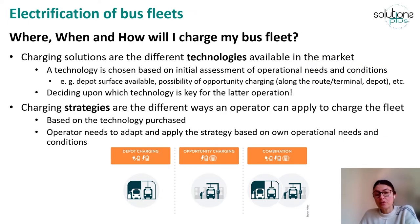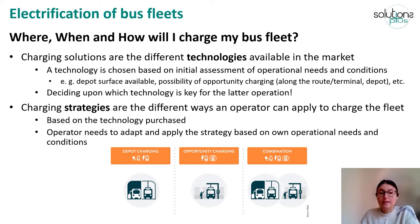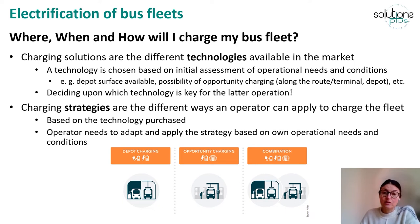The second question you will need to address when you deploy electric buses is when, where, and how are you going to charge your fleet. There are different charging technologies available in the market, so your choice is going to be determined by the assessment of operational needs and conditions of your bus line. Aspects like the surface you have available at your depot to deploy the charging infrastructure, also whether you can opportunity charge along the route, at terminals, or at the depot — all these aspects should be taken into account because they will ease the technology choice and how you define and design your charging strategy.